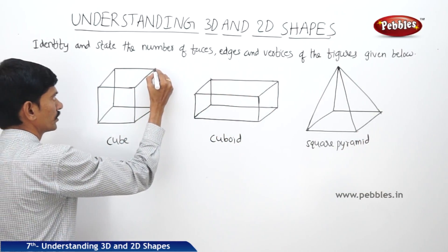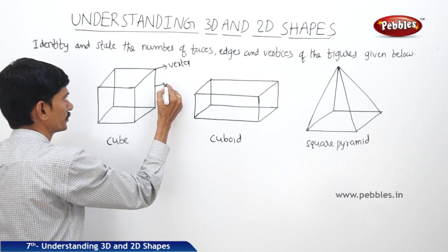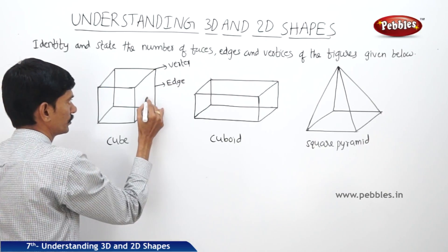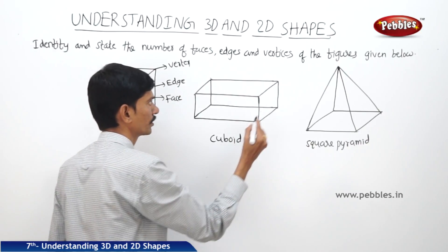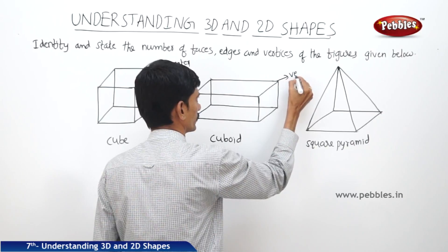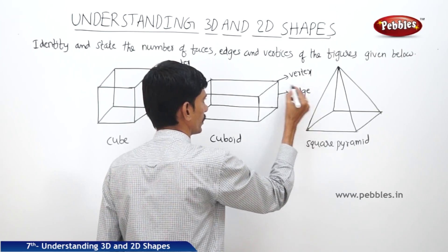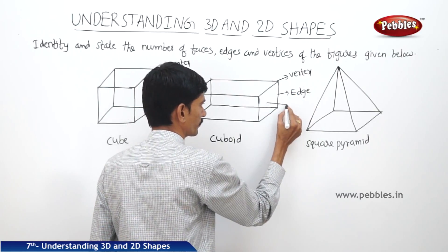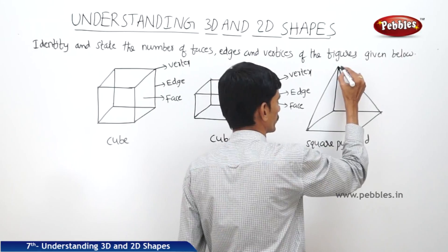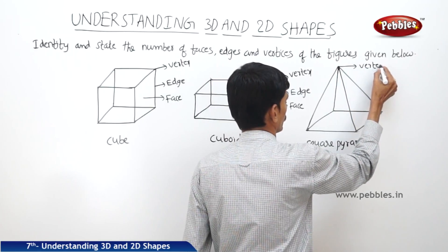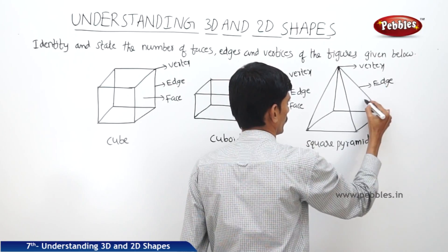So this is a desk. This corner is a vertex, this is an edge, and this is a face. Now if you consider the cube, this corner is a vertex, this is an edge — the line segment — and this flat surface is called a face.